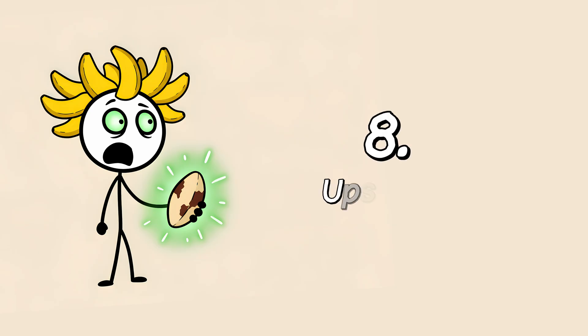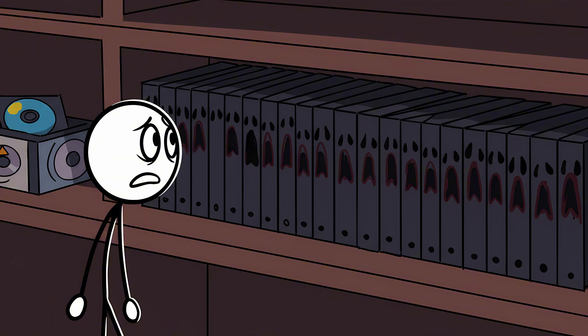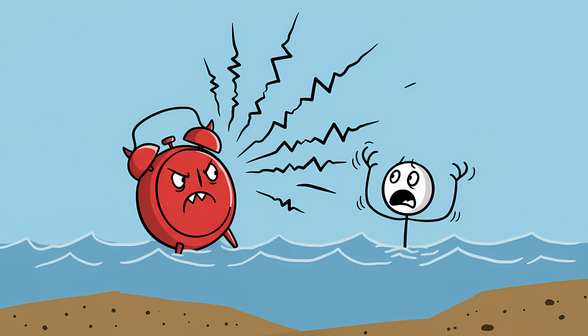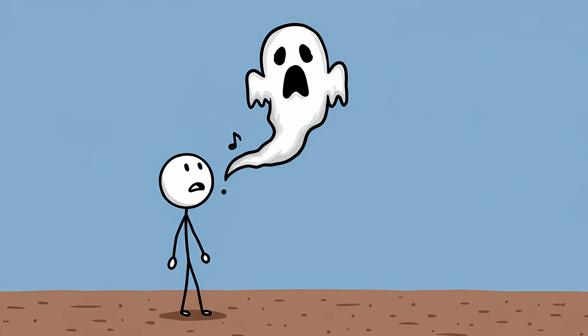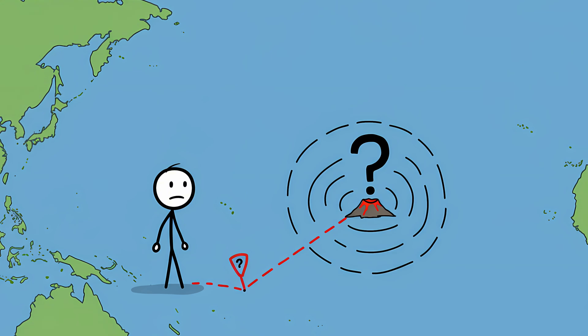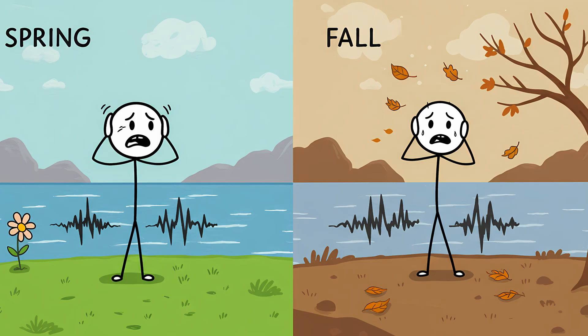Number 8: Upsweep. Now, unlike the one-hit wonders like Bloop and Julia, Upsweep is more like an ongoing horror series. First detected in 1991, it's a repeating sound that happens in bursts, kind of like an underwater alarm clock from hell. The sound is made up of long rising tones, like a siren or a ghost singing scales. Scientists have traced its origin to somewhere in the middle of the Pacific, near volcanic activity. But they still can't pin it down. It's seasonal too, getting louder during spring and fall, almost like the ocean is sticking to a schedule.